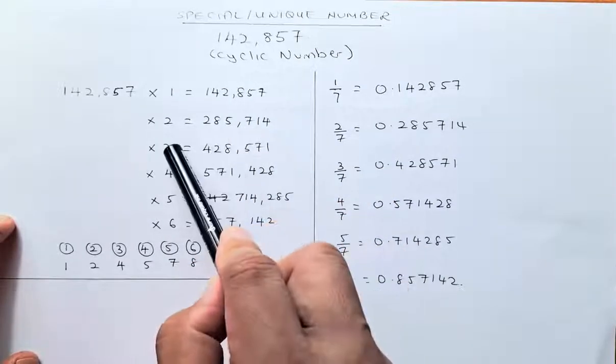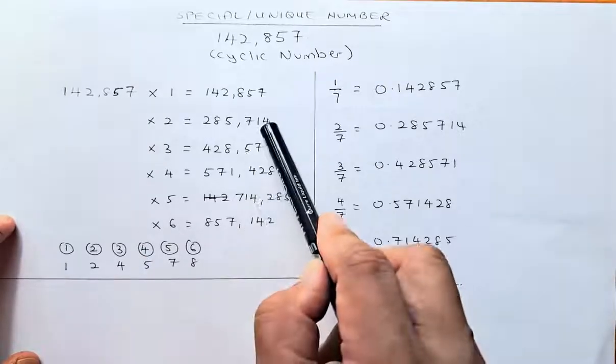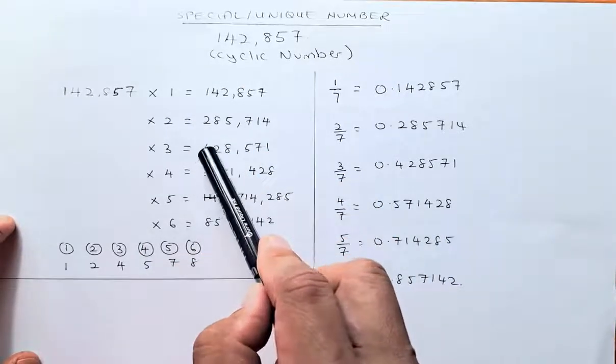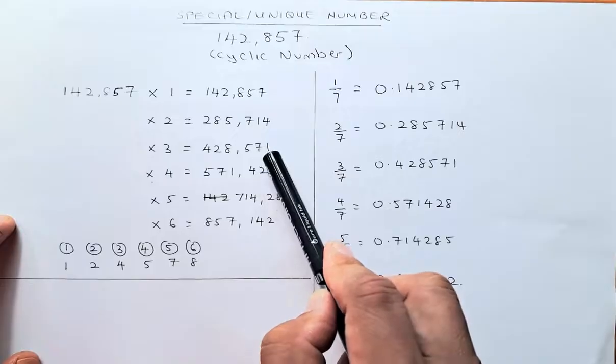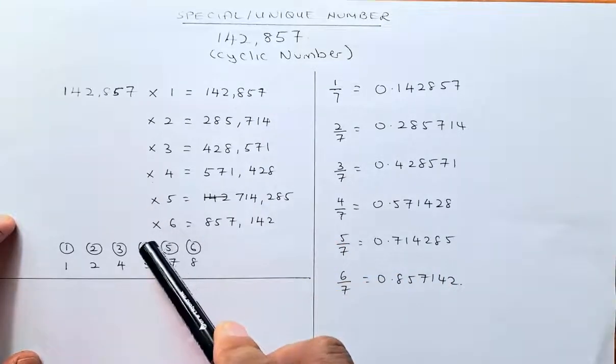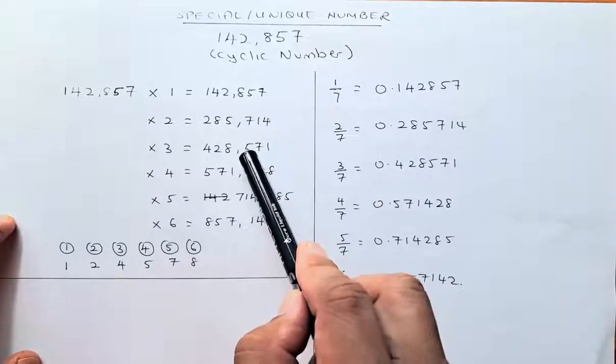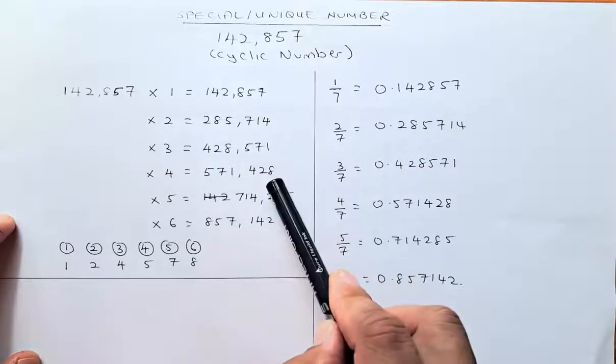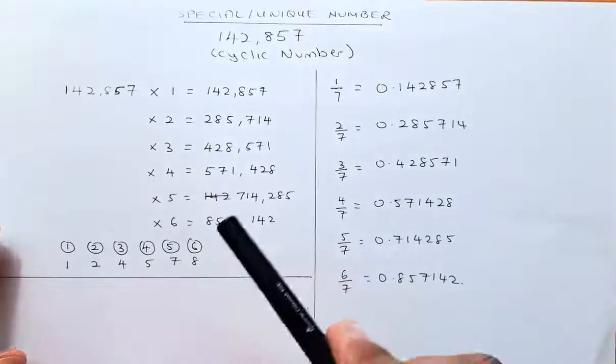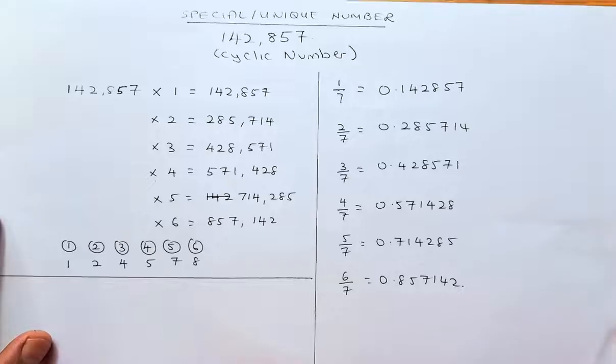If you multiply by 3, the third digit is 4, so you start at 4: 428571. Similarly, for the fourth position, you start at 5: 571428, and so forth. That's why it's called a cyclic number.